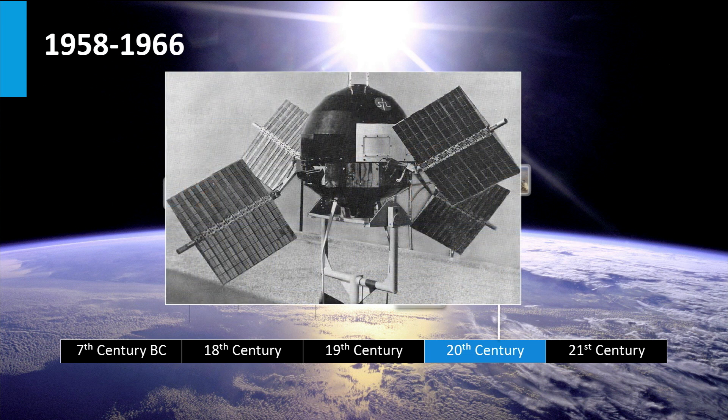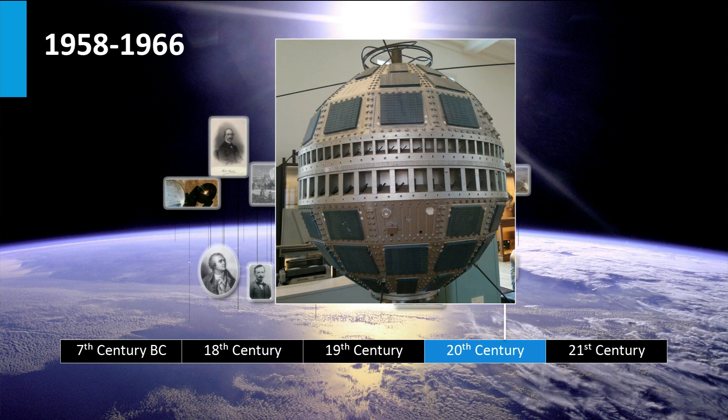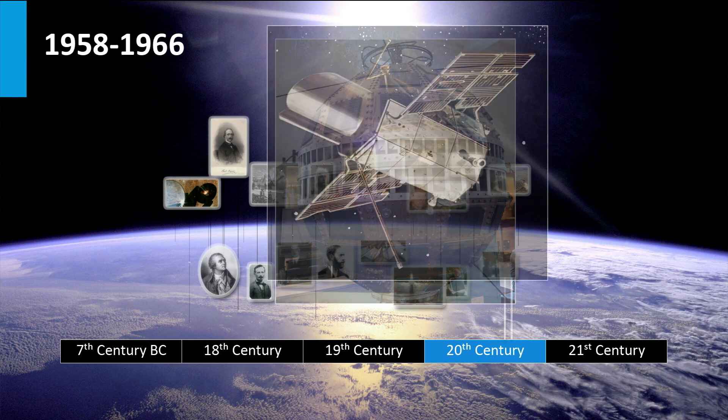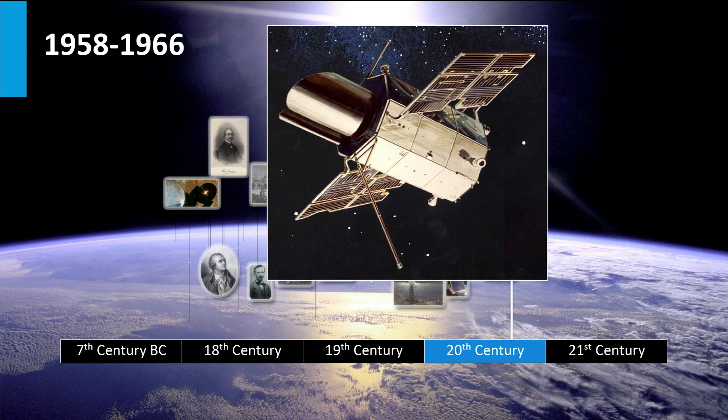In the mid and late 1950s, various companies and labs — among them U.S. Signal Corps Laboratories, RCA Lab, and Hoffman Electronics — developed silicon-based solar cells to power orbiting Earth satellites. From 1958 and into the 1960s, progress in PV technology was driven by the energy demand of space technology. Various satellites in the Vanguard, Explorer, and Sputnik series were launched with PV-powered systems on board. In 1962, Bell Telephone Laboratories launched the first solar-powered telecommunications satellite, and in 1966, NASA launched the first orbiting astronomical observatory powered by a 1 kW photovoltaic solar array.